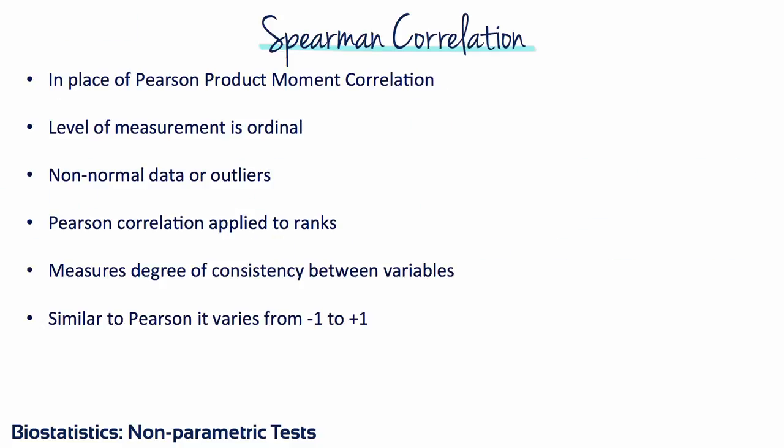The Pearson correlation coefficient measures the strength of the linear relationship between two continuous variables. Sometimes a researcher encounters situations when the two variables are not on a continuous scale, or the distribution of at least one variable is not normal or contains outliers. In such circumstances, the Pearson correlation may not give a good estimate of the relationship. A better measure is the Spearman Rank correlation. The Spearman Rank correlation converts the scores from each variable into ranks and then applies the Pearson correlation to the transformed ranks. It is a measure of the linear relationship between the rank scores, and like the Pearson correlation, ranges from negative 1 to positive 1.